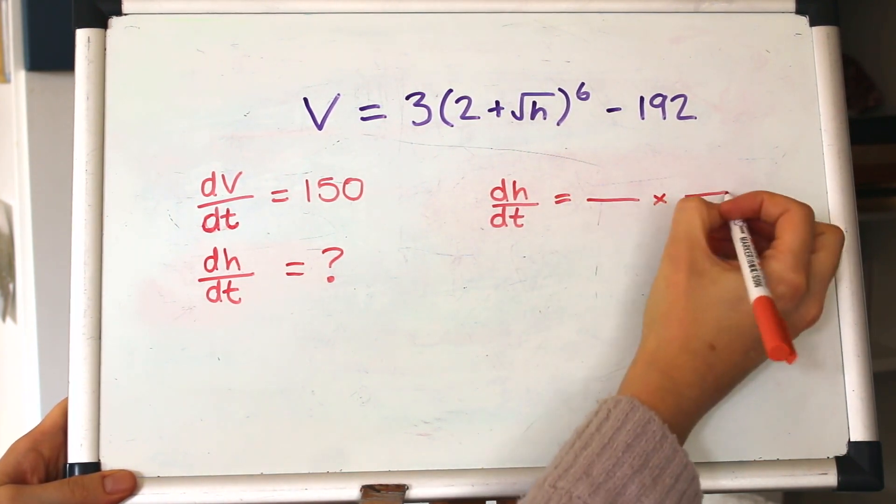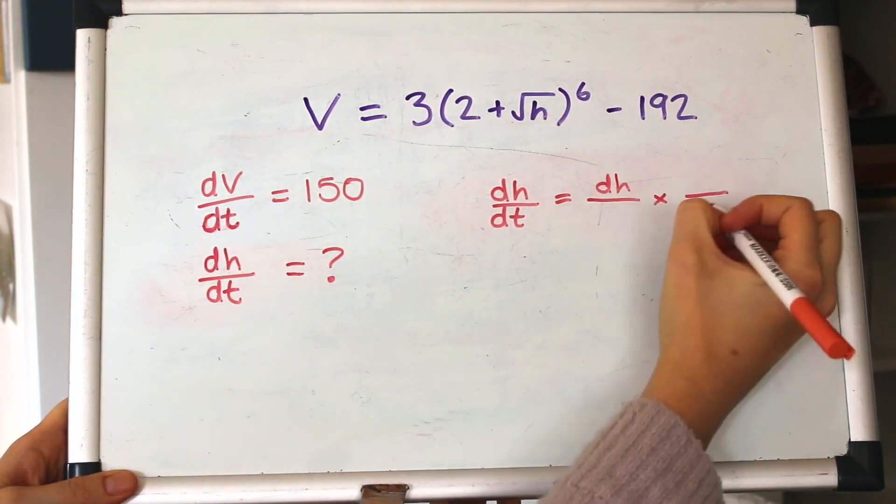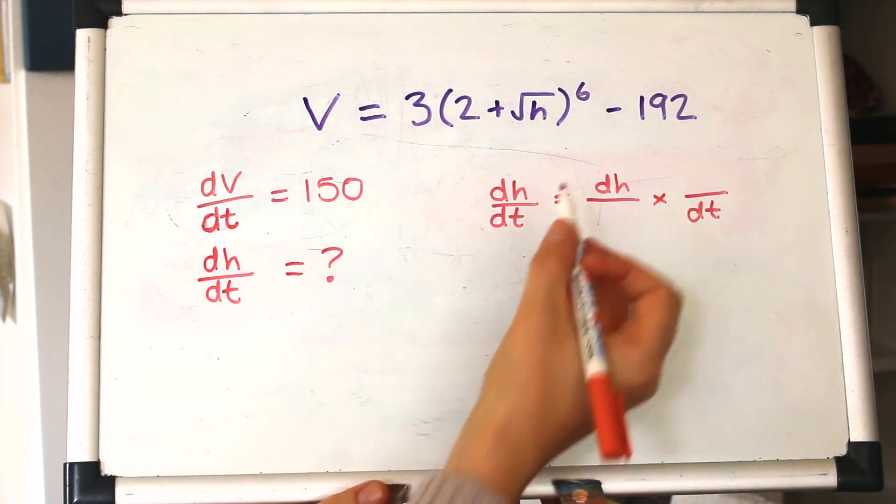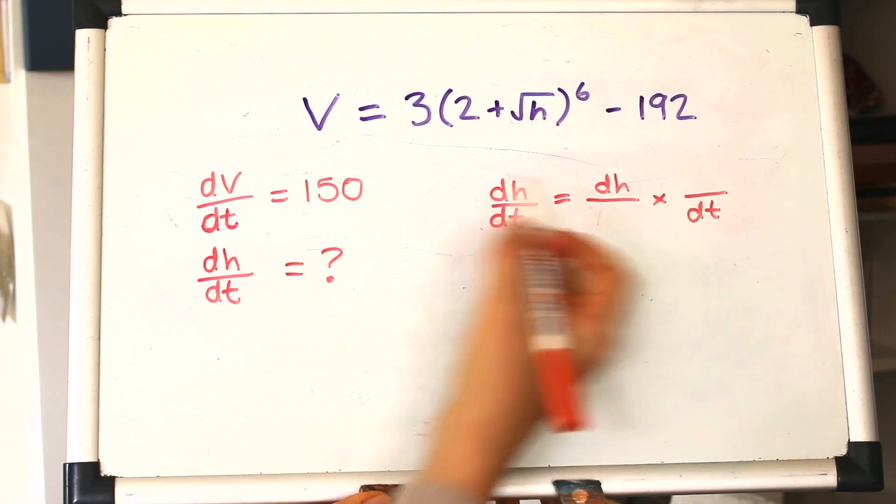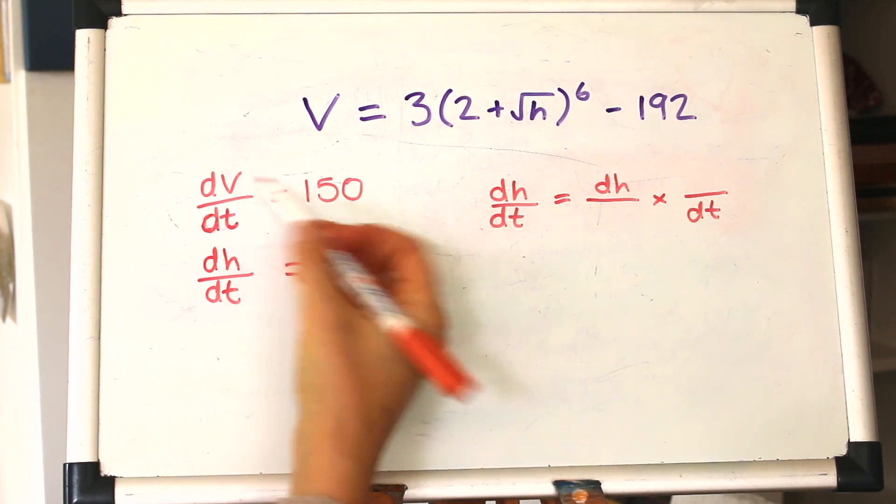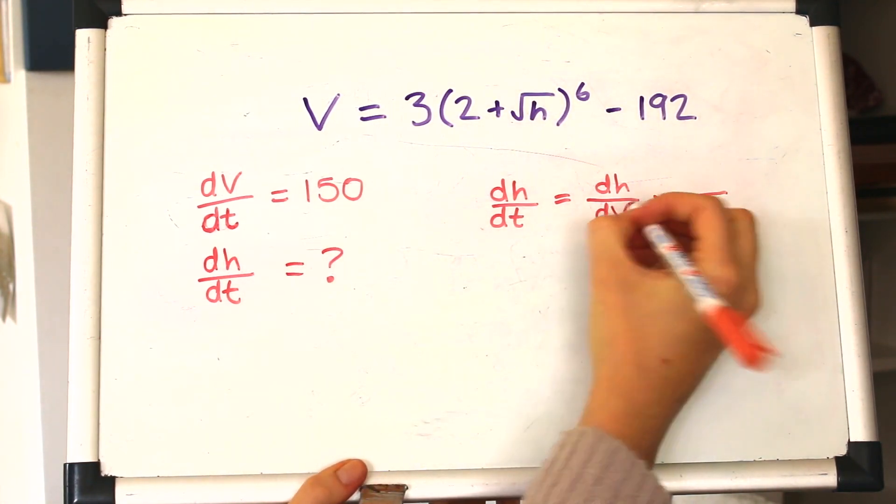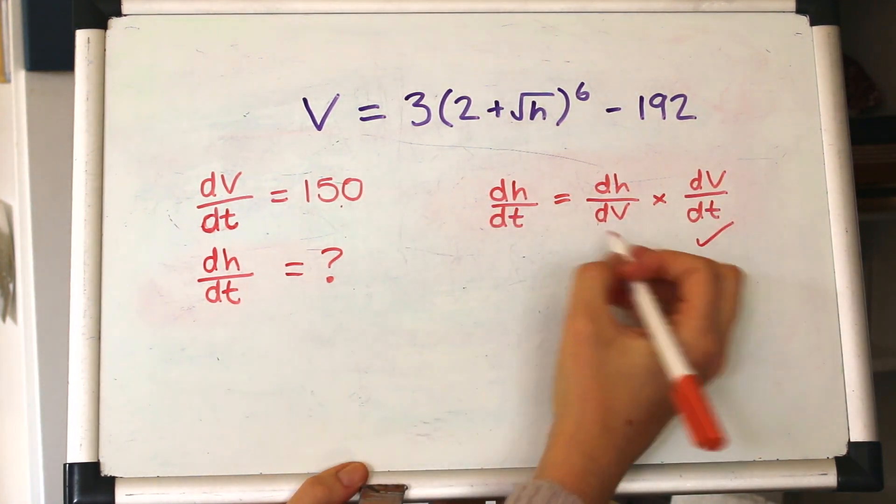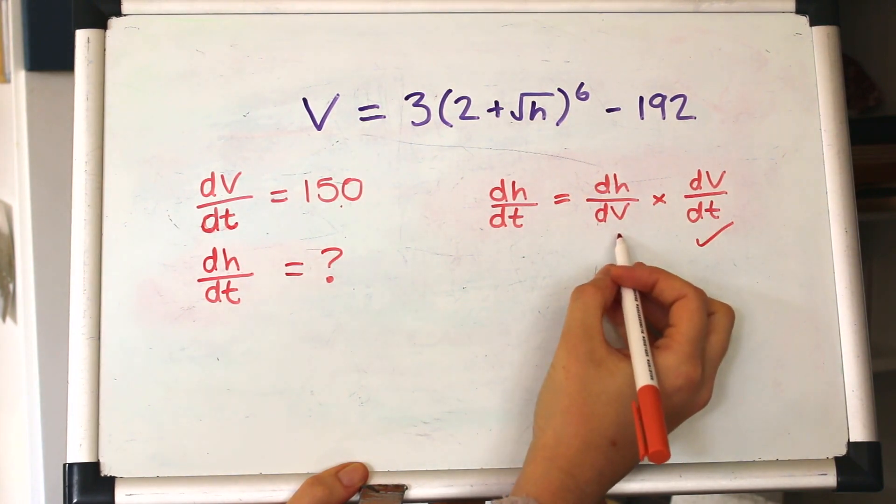So again, like last time, we'll put dH on the top and dt on the bottom of the first and second, and fill in the other variable that we'll cancel. The other variable we've got here is V, so dV. dV by dt we've got, that's 150, and we need dH by dV.